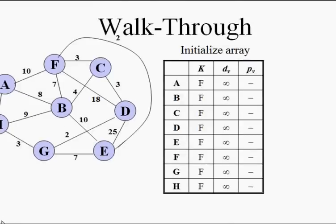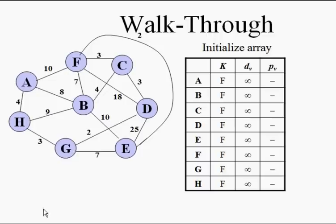Prim's algorithm starts with any vertex — you can take a, b, c, or any vertex. In this example we take d. We then look for the minimum weighted edge from that vertex. You'll notice in the walkthrough that when we select one edge, for example from d to e, d to f, or d to c, we pick the minimum weighted one.